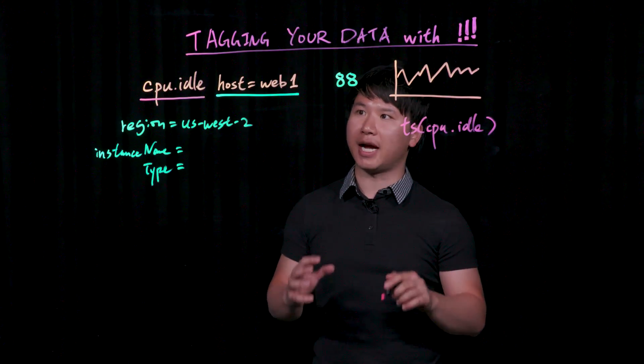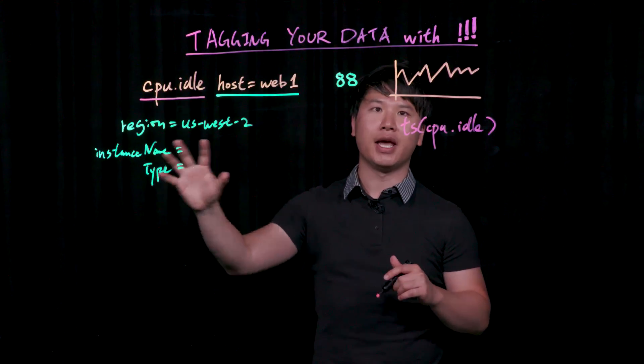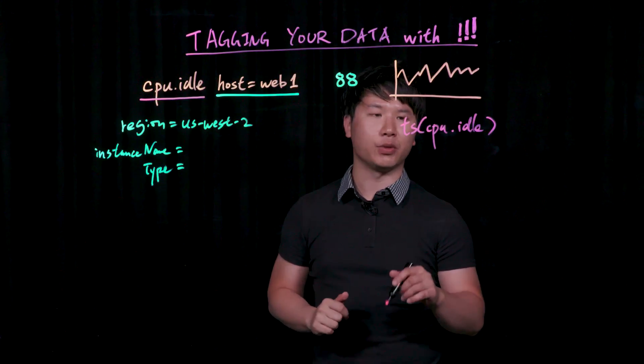Wavefront differentiates a time series by the metric name, the host, and the set of tags that it contains, and we'll render it as a single continuous line in the UI.